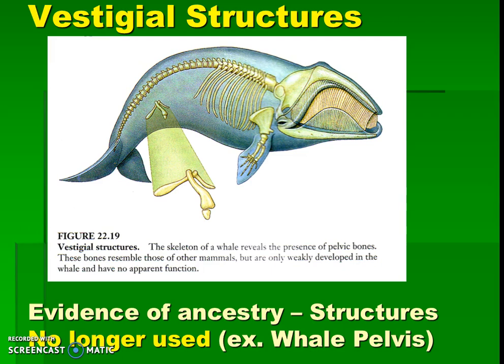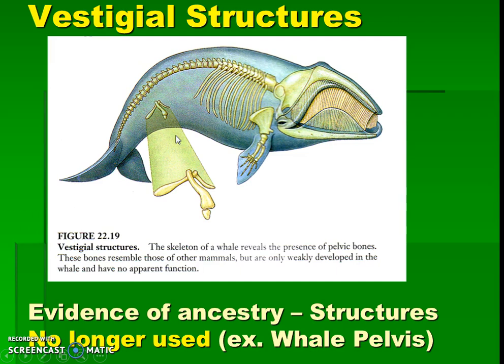Next we have vestigial structures. Vestigial structures can tell us what a common ancestor might have been like. Our biggest example is the whale pelvis. A pelvis is part of our leg bone structures — it's where the leg attaches to the hip. Whales we would think wouldn't need this structure, because we don't see them walking around. But this suggests that the whale had an ancestor that did in fact have actual legs. Even though this structure is no longer used, it remains as a remnant. We have examples of this in our own bodies too — our tailbone is an example of a vestigial structure: a structure that's no longer used but tells us some of the past history of the organism.